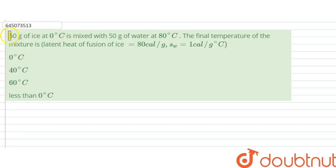The question says 50 grams of ice at 0 degrees Celsius is mixed with 50 grams of water at 80 degrees Celsius. The final temperature of the mixture is what? So what we are given is: